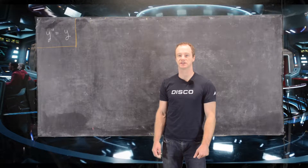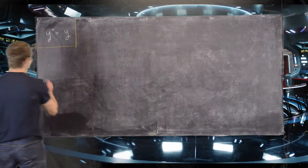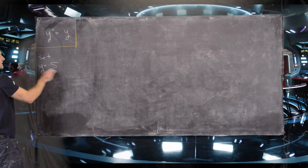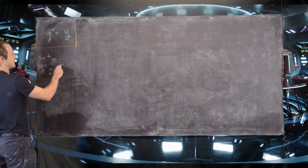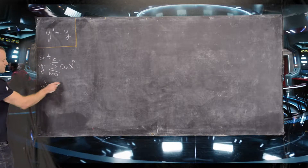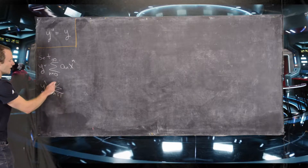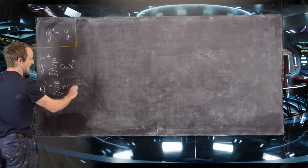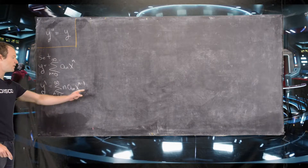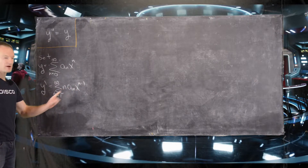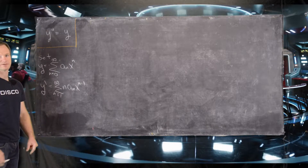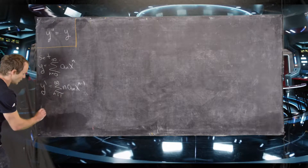We'll get started by setting y equal to the sum from n = 0 to infinity of aₙ xⁿ. We need y', which is the sum from n = 1 to infinity of n·aₙ·xⁿ⁻¹. I did term-by-term differentiation here, but notice when n came out front I no longer need the n = 0 term because that would give 0.